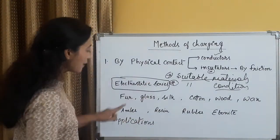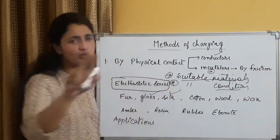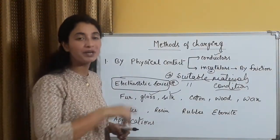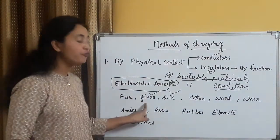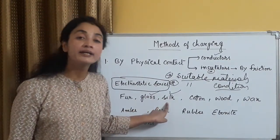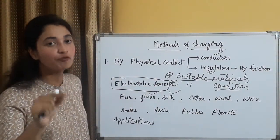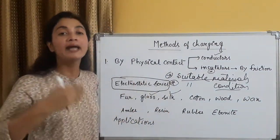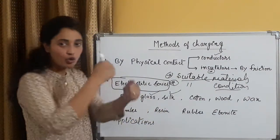Lekin ek roughly understanding ke liye, ek electrostatic series ki baat karte hai. Sabse pehle series mein rakha hai, experimental basis pe, first it is glass, followed by silk, cotton, wood, wax, amber, resin, rubber and ebonite. Now what is the use of this series? Is series ka use kya hai? Suppose humne in mein se koi bhi do materials ko pick kiya, suppose I pick up glass and silk. Bahut commonly used example hai electrostatics ke andar, very commonly used example in the field of electrostatics. We pick up glass and silk, and we rub them together, glass with silk, we rub them together.